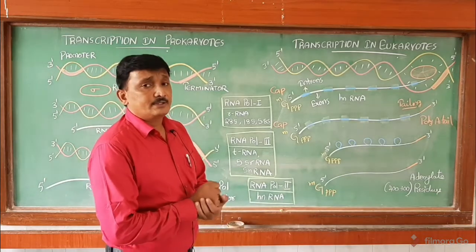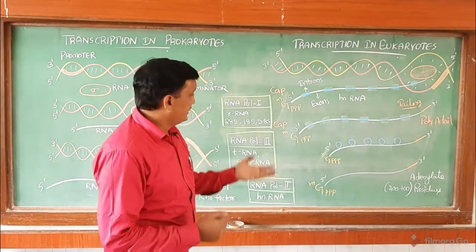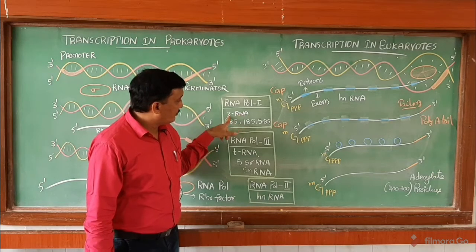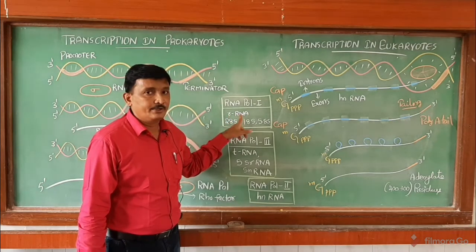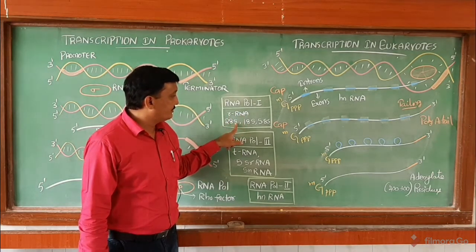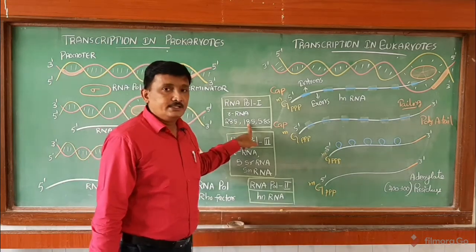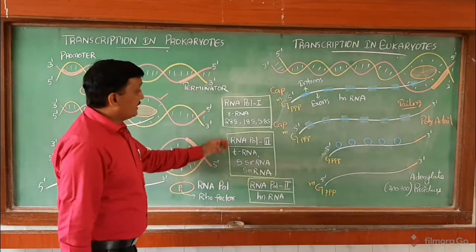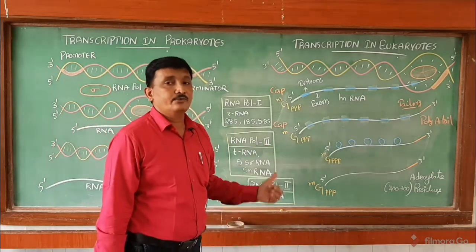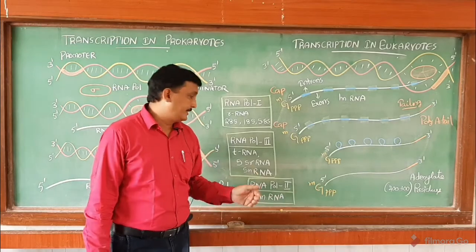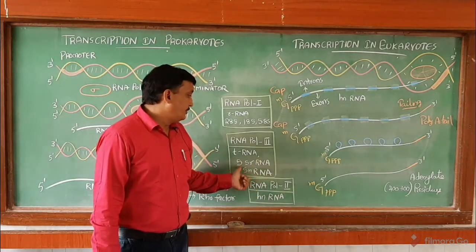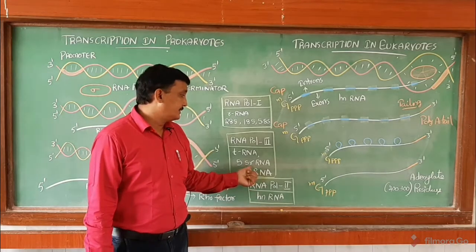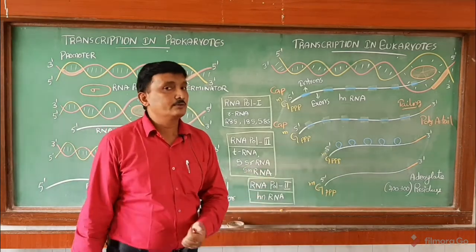What are the functions of these three types of RNA polymerases? RNA polymerase 1 catalyzes the formation of ribosomal RNA subunits like 28 Svedberg units, 18 Svedberg units, and 5.8 Svedberg units. Whereas RNA polymerase 3 helps in the transcription of transfer RNA (tRNA) and 5S rRNA, which are smaller subunits of ribosomal RNA.